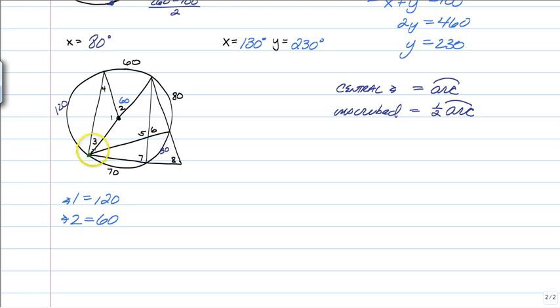Inscribed angles are half the arc. So if angle 3 is intersecting the 60 degree arc, then angle 3 is going to be 30 degrees. And I've suggested that you write them on the circle because now you have 120 and 30.